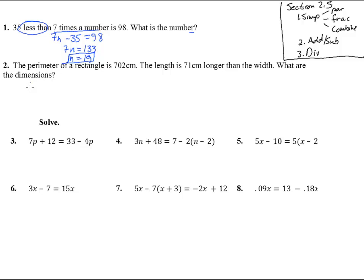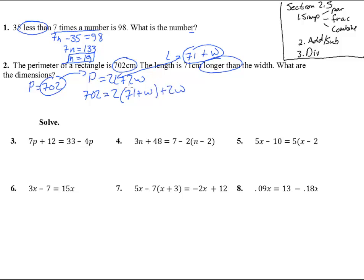Now it says the perimeter of a rectangle is 702 centimeters. The length is 71 longer than the width. Remember the perimeter is 2L plus 2W. So we're going to take 702 by sticking that in there, then equals two lengths, which we know are 71 plus the width, plus 2W, so 2L plus 2W. We now have our equation.